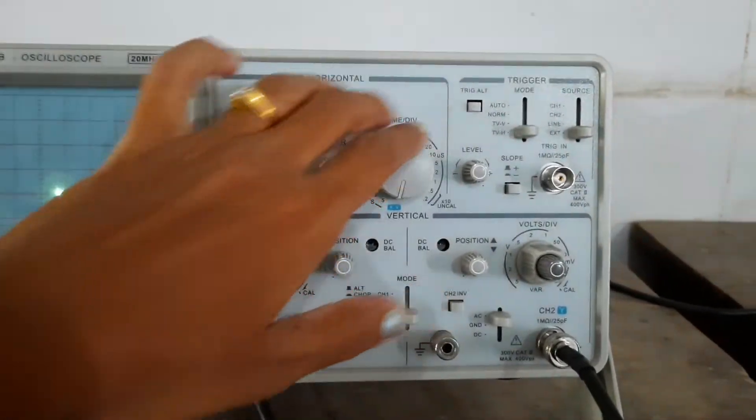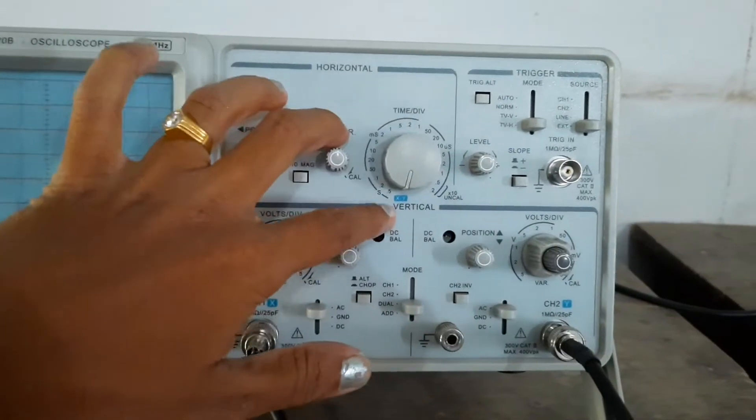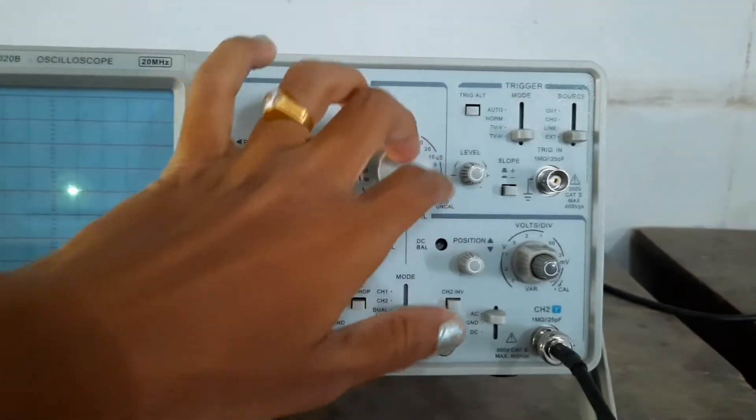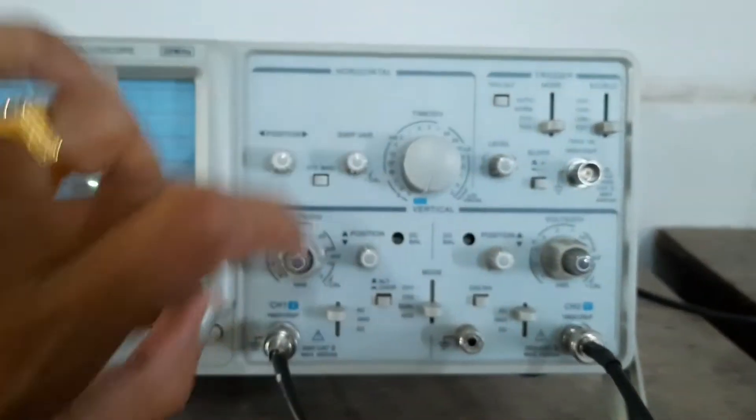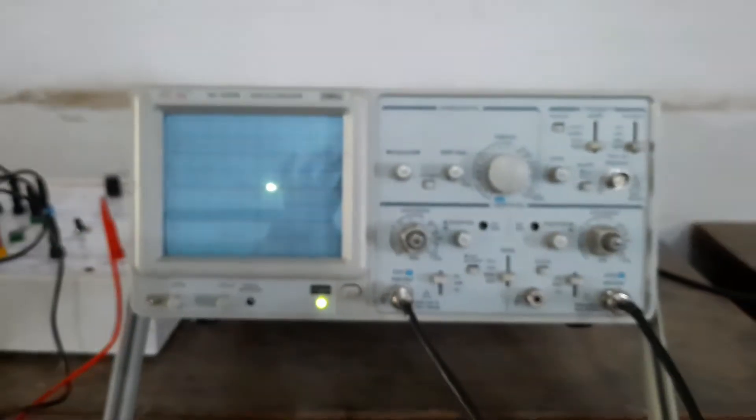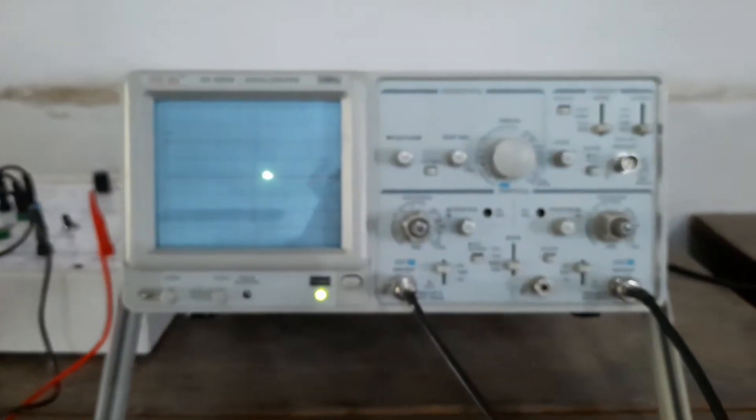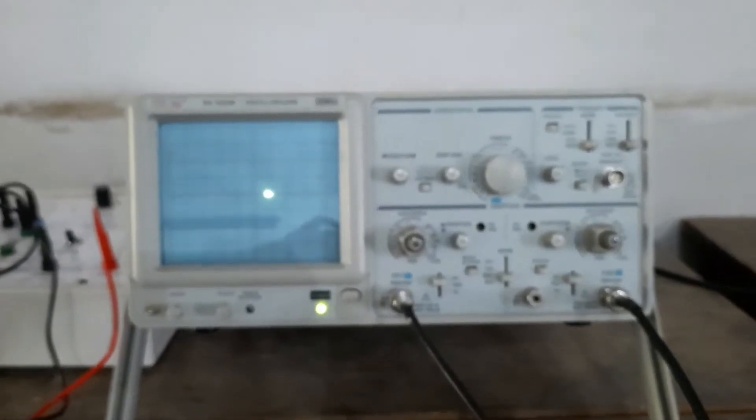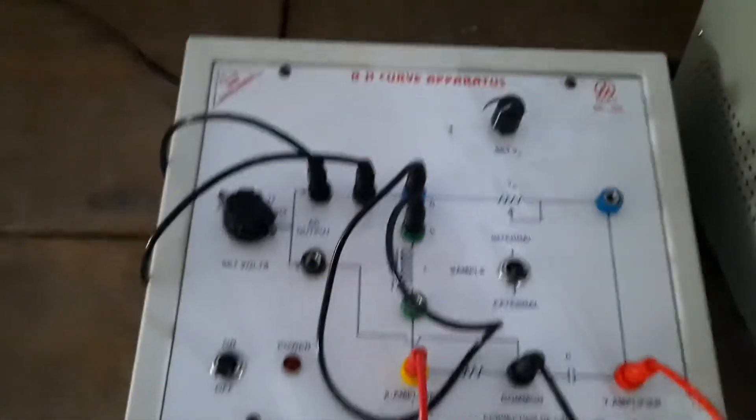And this is the time per division scale. So this is the trigger section. So first what we have to do here, just I will show you the kit of BH curve apparatus.